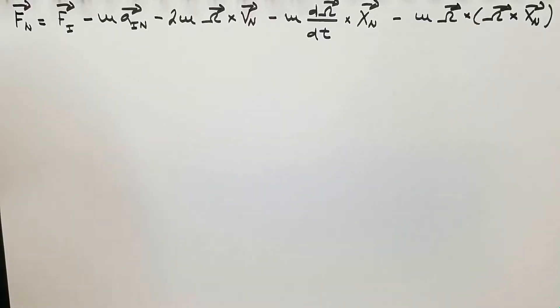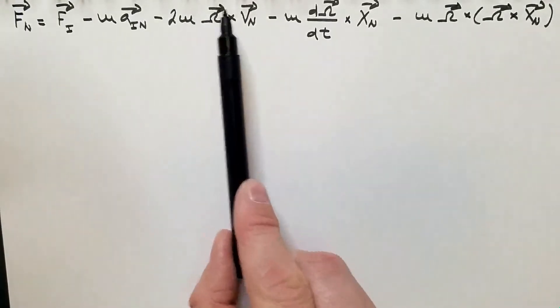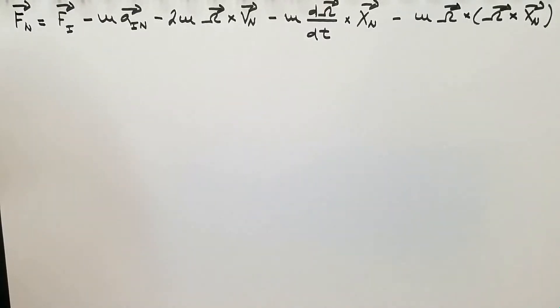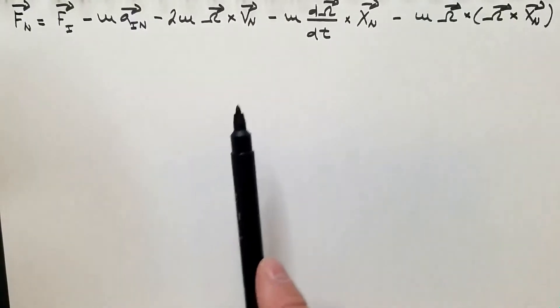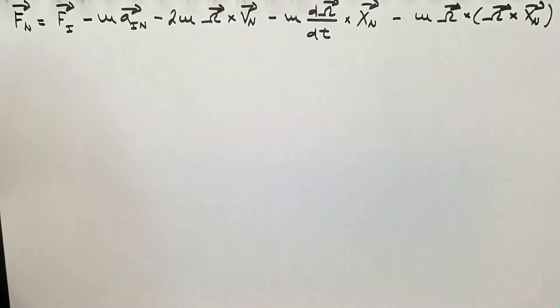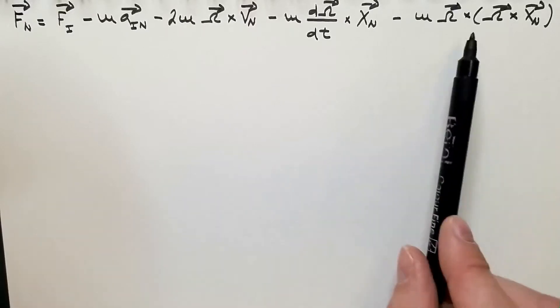This is where we concluded last time. In the last video, we derived this equation that extends second Newton's law to non-inertial reference frames: Coriolis force, Euler force, and centrifugal force. I highly recommend you check this video because in order to understand this equation properly, it is not enough to watch this video. In the previous one, we derived it explicitly. In today's video, the goal is only to look into the centrifugal force.